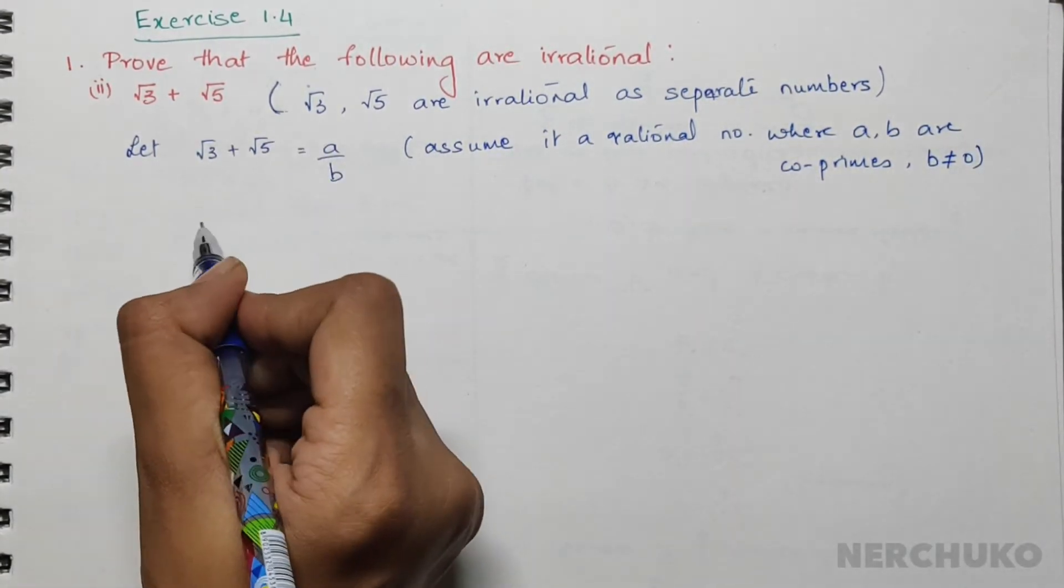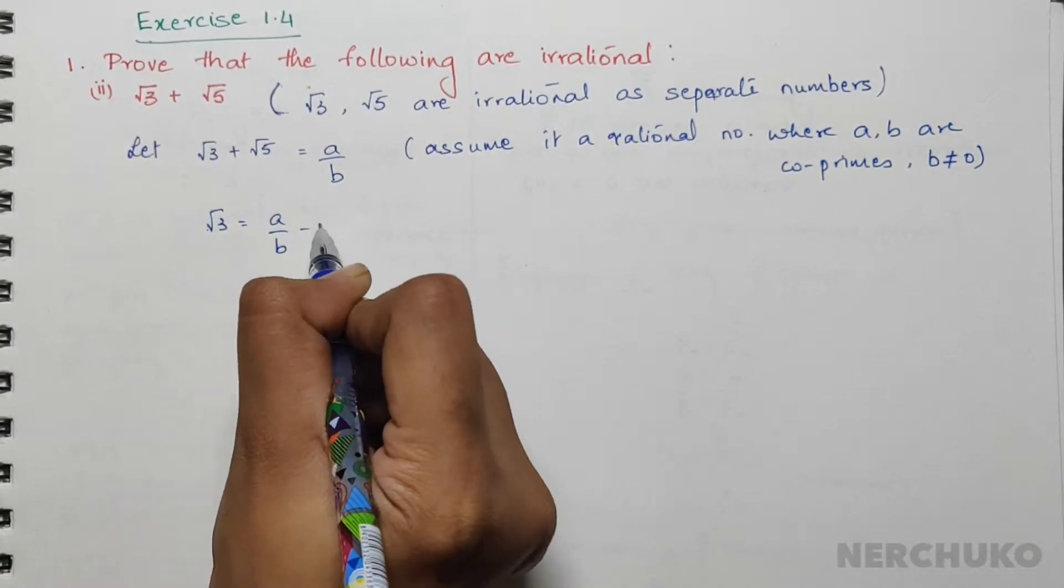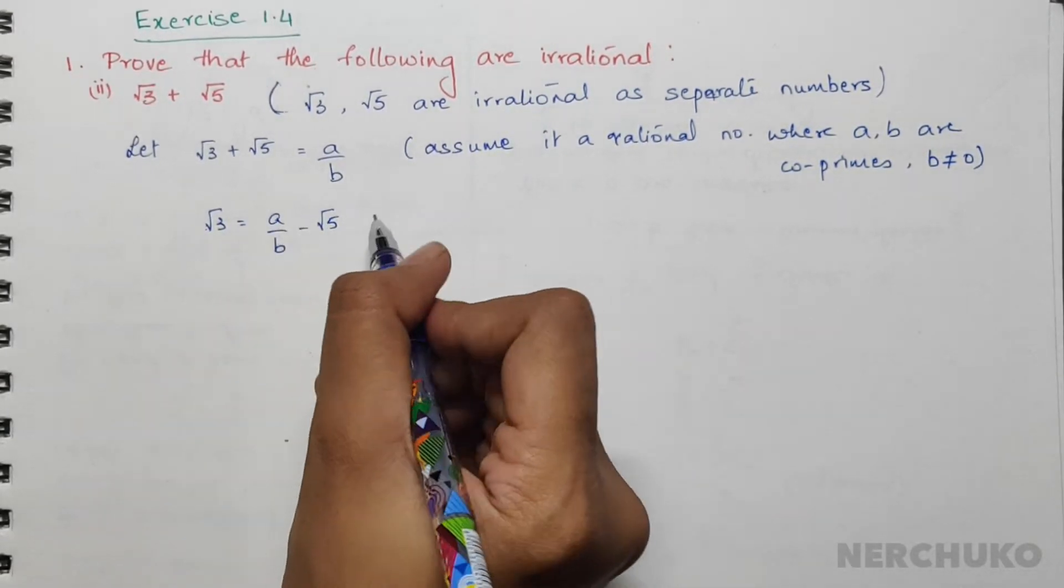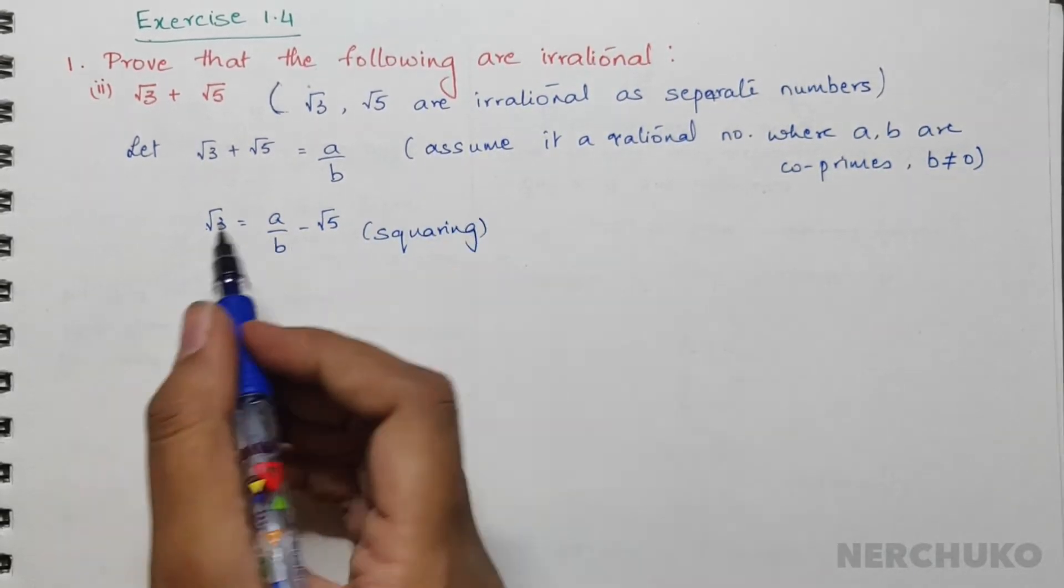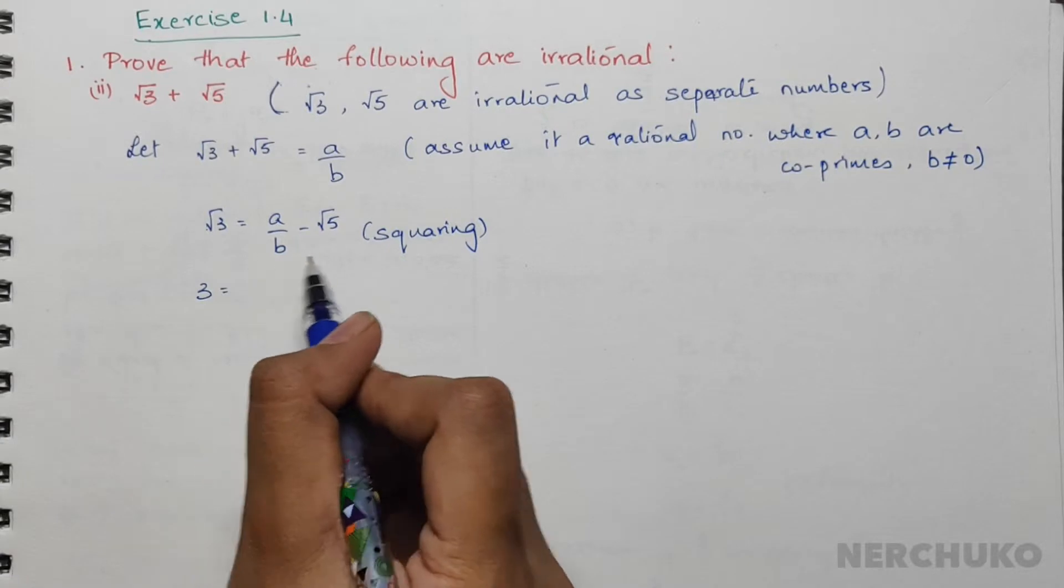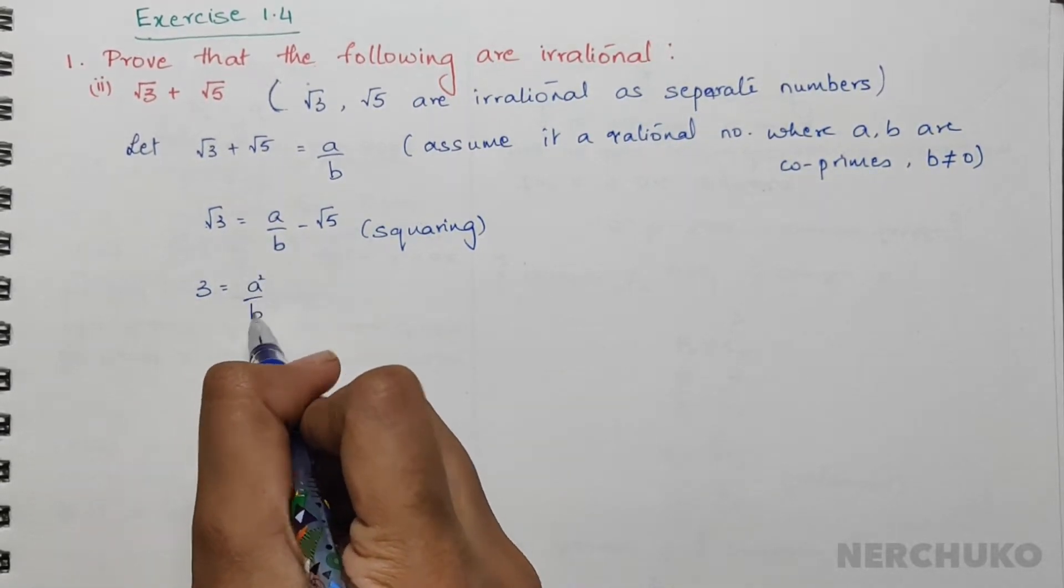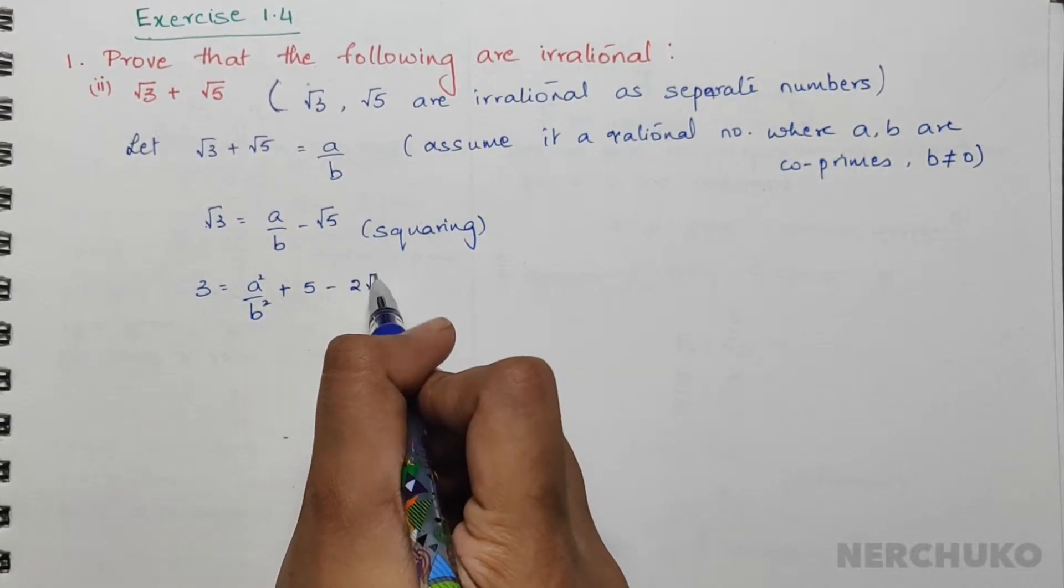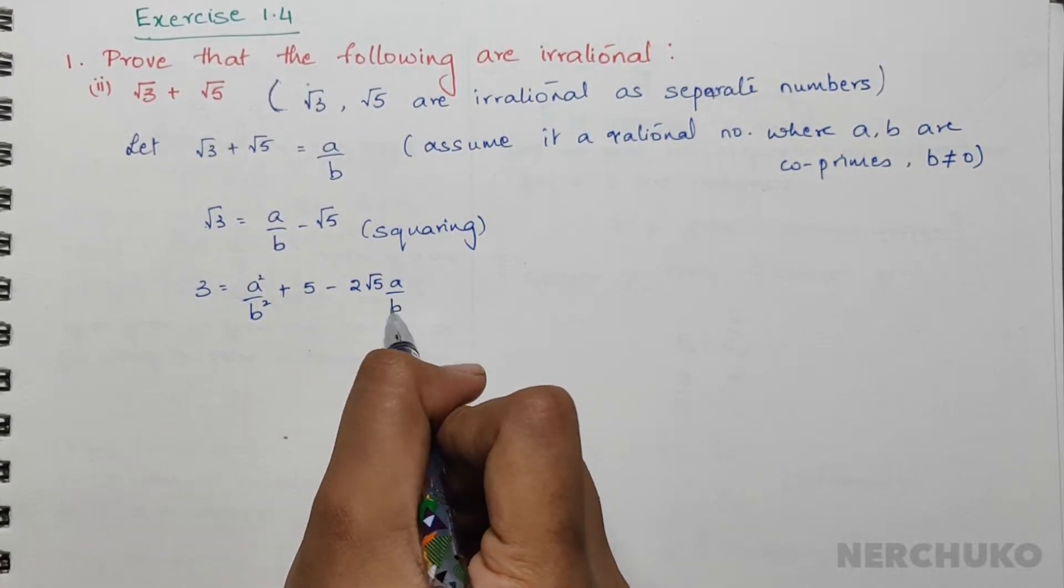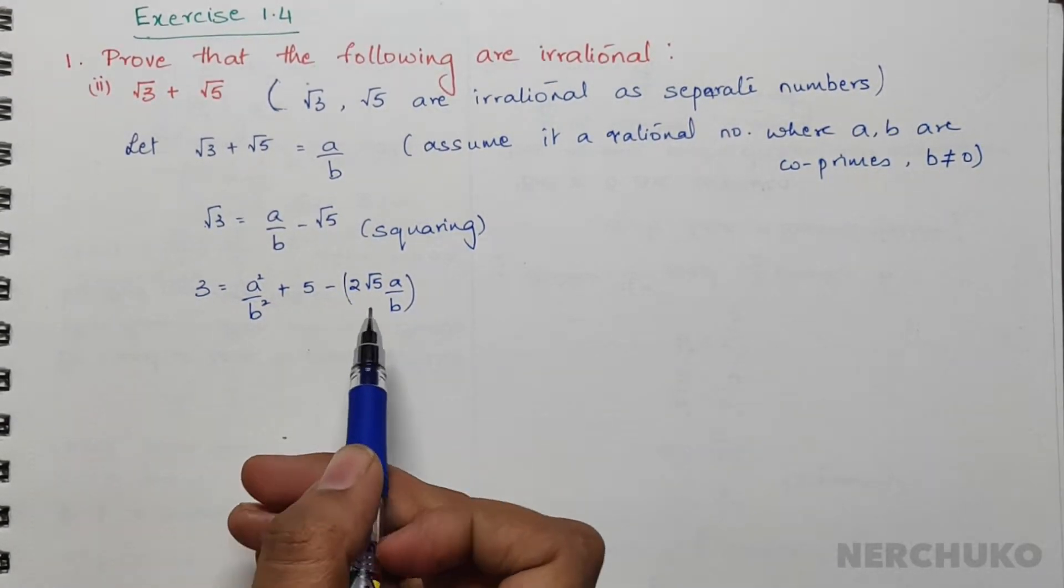Now if I send √5 to the other side, we will have √3 = a/b - √5. On squaring, we will have 3 = a²/b² + 5 - 2√5·a/b.